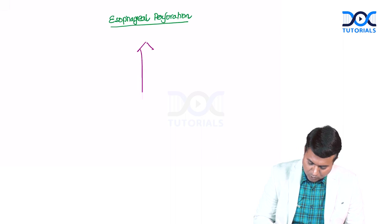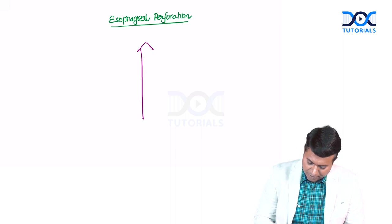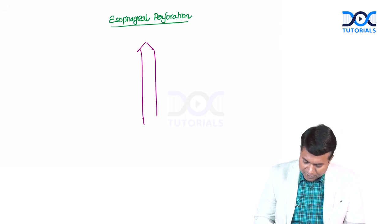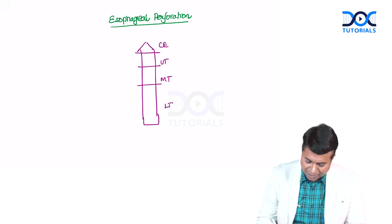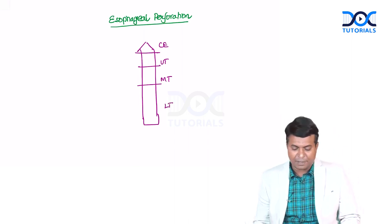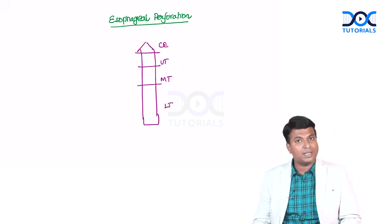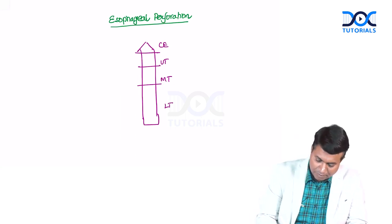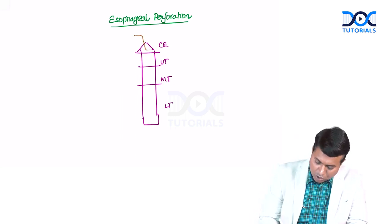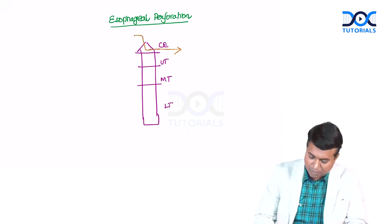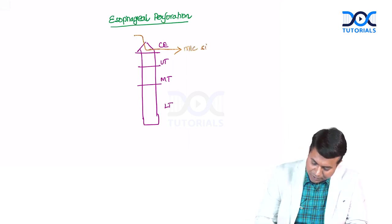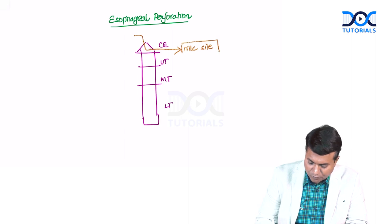The esophagus is 25 centimeters in length. We can divide the esophagus into four parts: cervical esophagus, upper thoracic, middle thoracic, and lower thoracic — I will discuss them in the cancer chapter. Among all perforations, cervical esophageal perforation is the most common site of esophageal perforation.